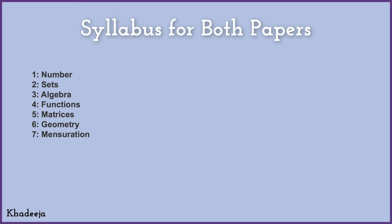Mensuration covers area, volume, and perimeter — including volume of 3D objects and density. It's a very vast topic and you need to know all the formulas. Importantly, in this exam you don't always get the formulas given to you, so you need to memorize them. Then Vectors and Transformation Geometry — vectors is a difficult topic because the questions can vary greatly and require a lot of practice.